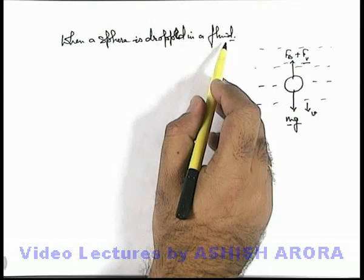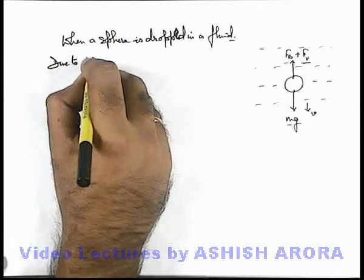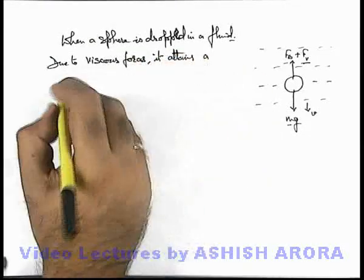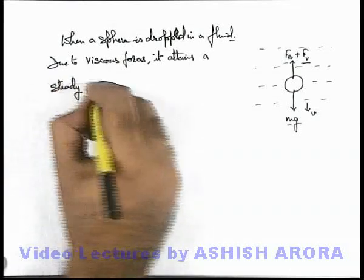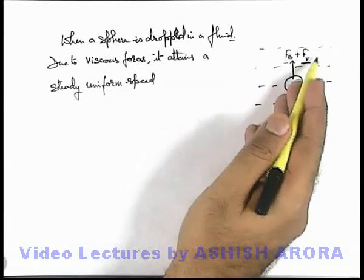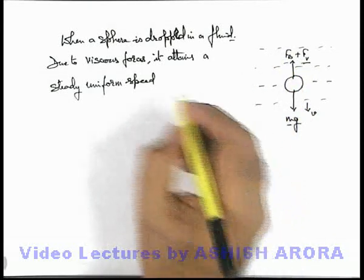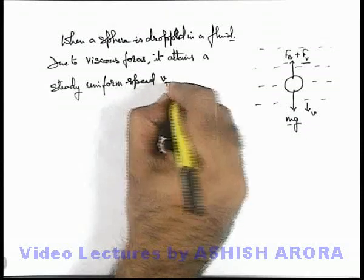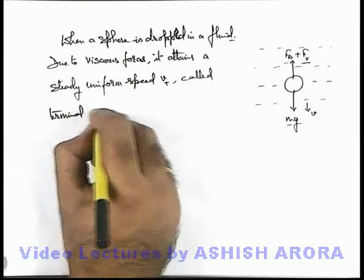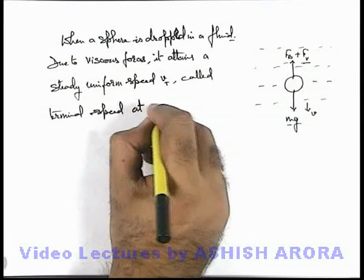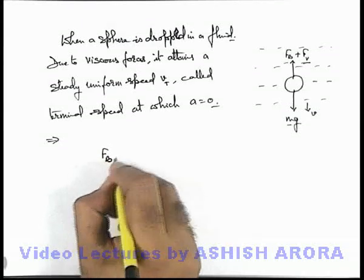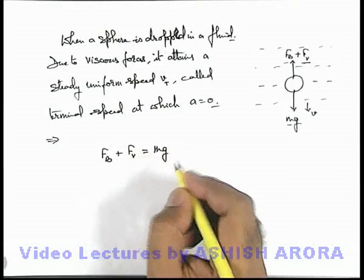So we can say when a sphere is dropped in a liquid, due to viscous forces it attains a steady uniform speed. This happens because viscous forces increase with speed, so at some point these two forces balance the weight. This steady uniform speed is called vt, the terminal velocity or terminal speed, at which the acceleration of the body becomes zero, meaning the buoyant force and the viscous force balance the weight of the body.